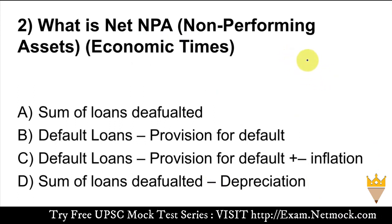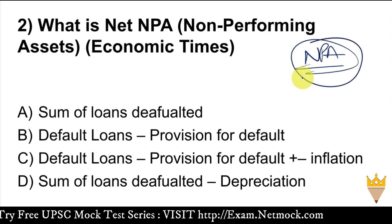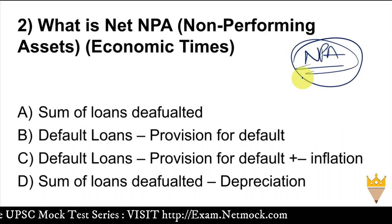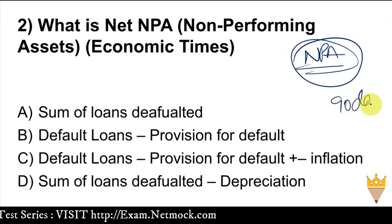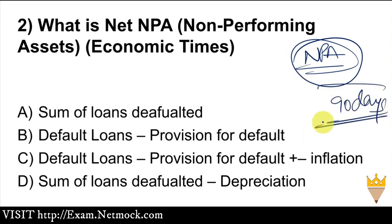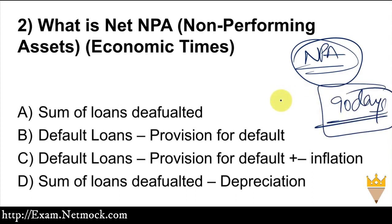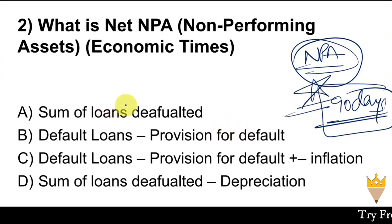Let's discuss. First of all, Non-Performing Assets are loans recorded in the bank's balance sheet where the borrower has defaulted. When a loan is not repaid for 90 days, it is classified as NPA. The bank then makes a provision — for example, 0.5% or more — against those defaulted loans. One common exam question is: how many days after default does a bank classify a loan as NPA?